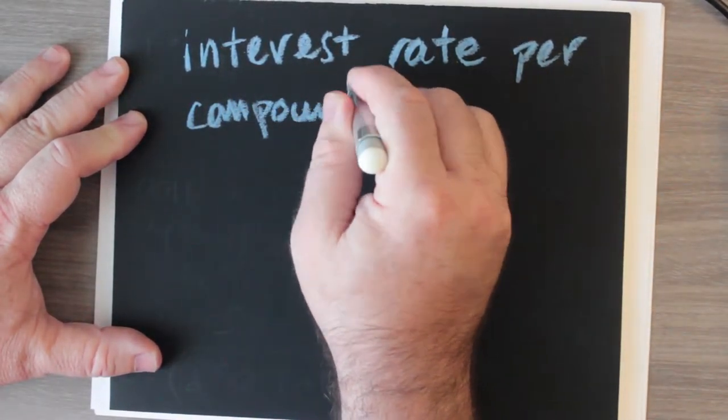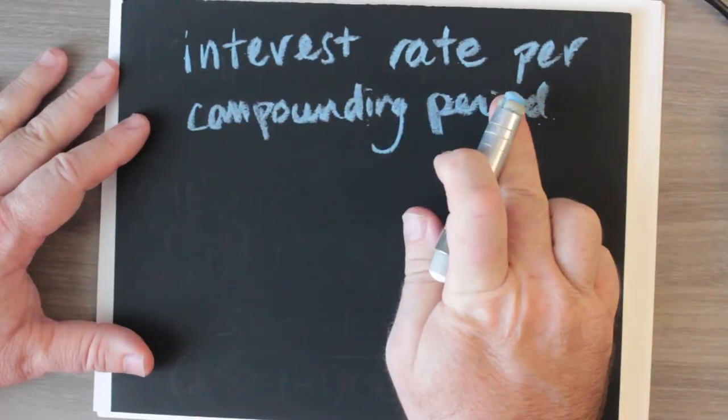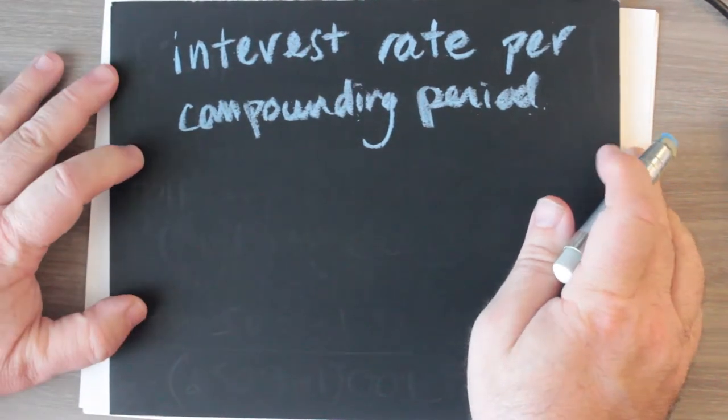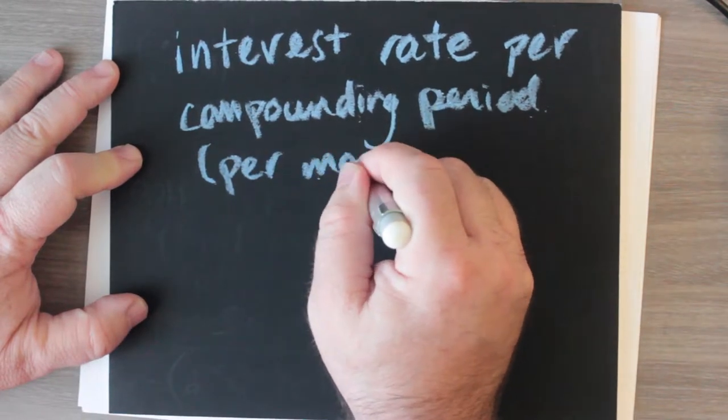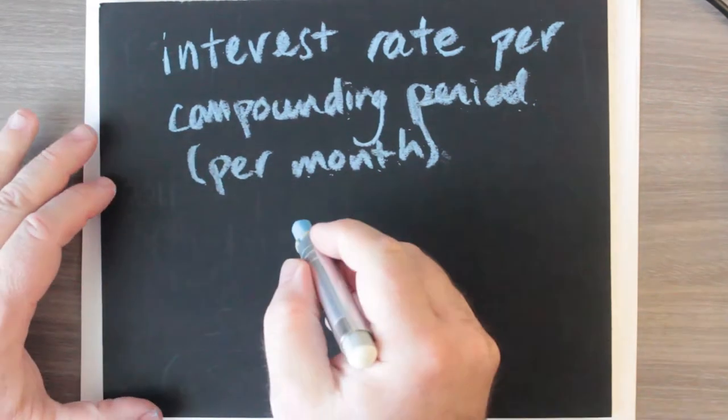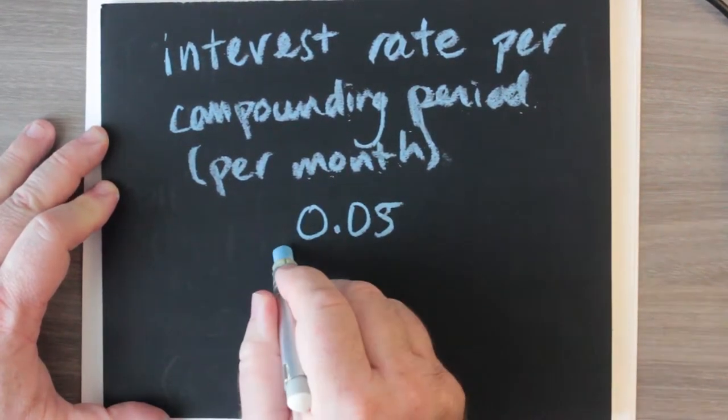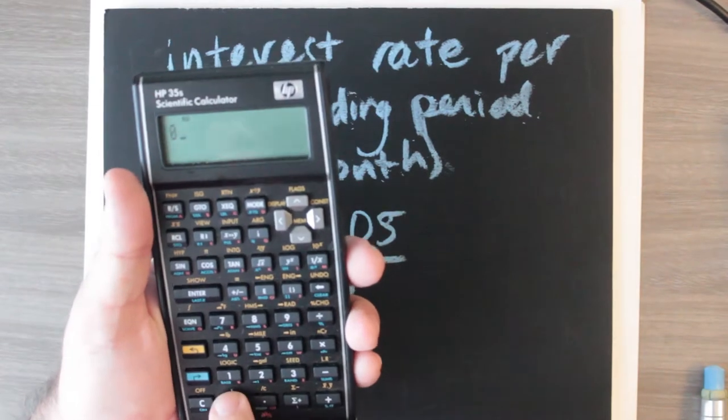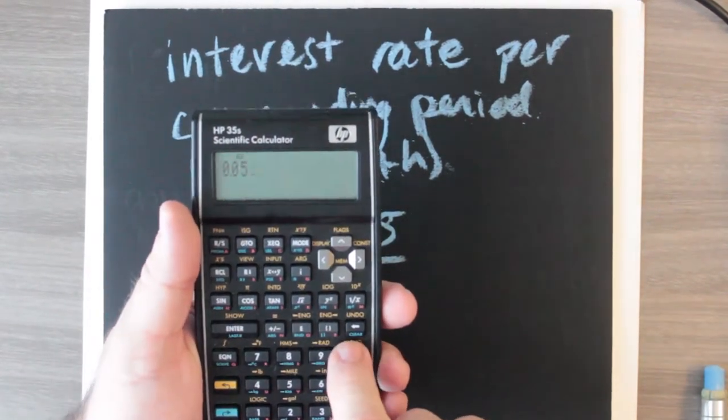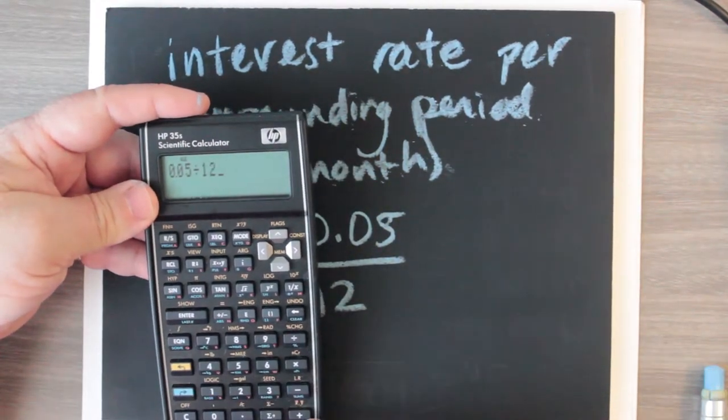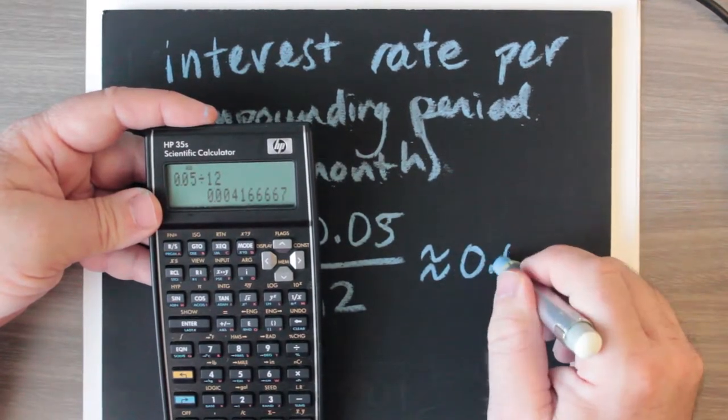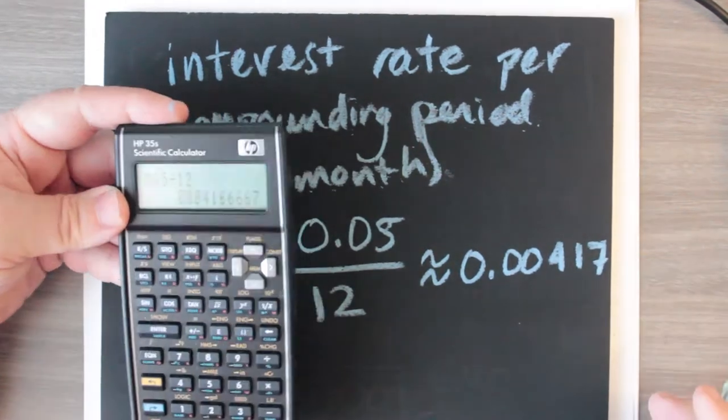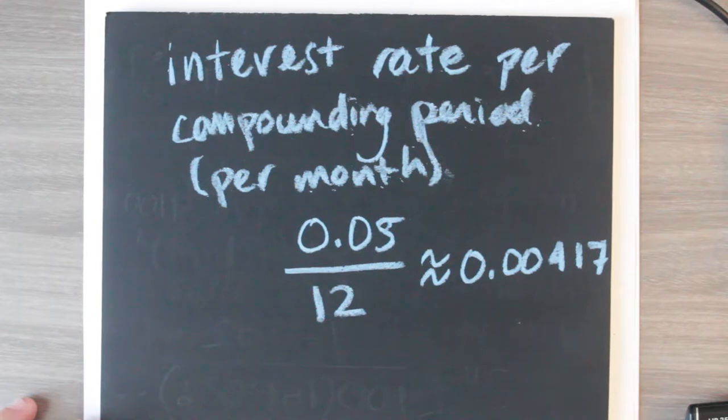We find the interest rate per compounding period, which effectively means per month. In the question, we're given the interest rate compounded per year, but we want the interest rate per month. So we have the annual interest rate, 5% per year, expressed as a decimal, divided by 12. If we go to our calculator, 0.05 divided by 12, we get 0.00417, and that'll take us through this calculation.